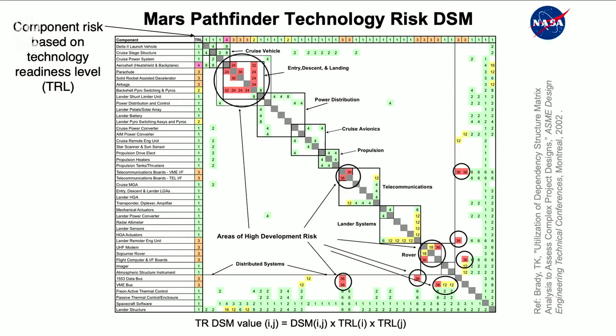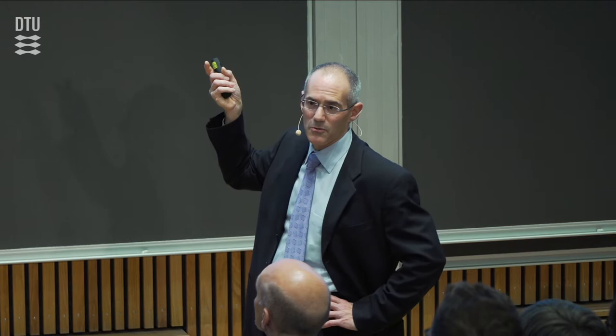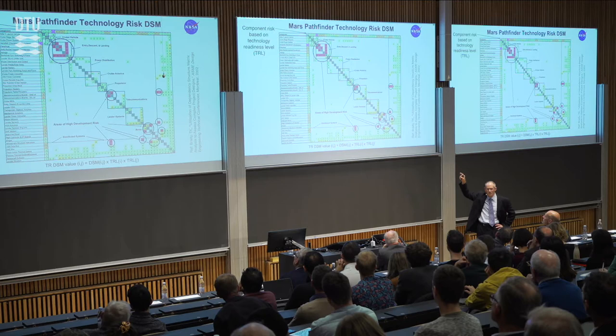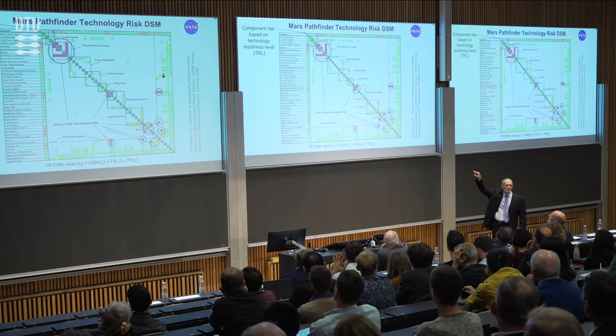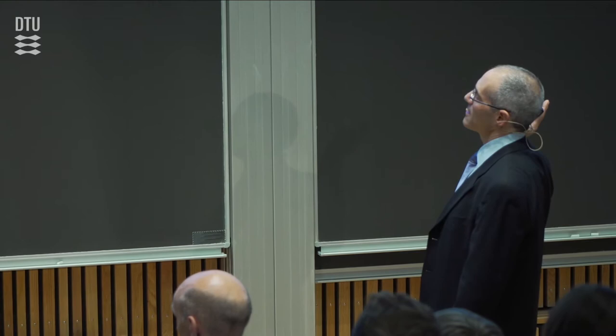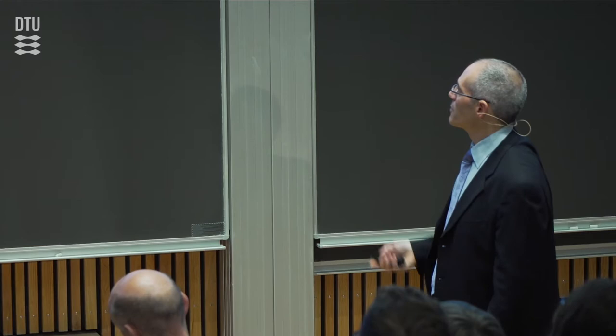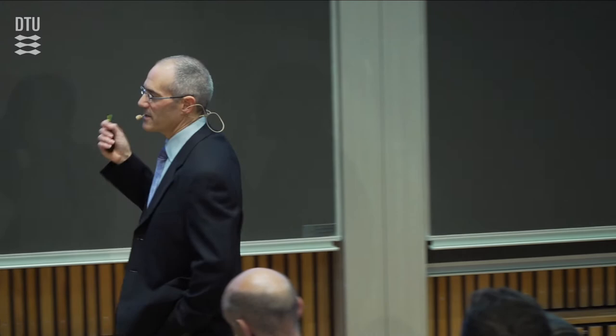So it was a highly critical interface with new technology on both sides — a high risk interface. This allowed them to lay out for the whole mission where all the high risk interfaces are and where the high risk areas of development are. That's an example of a system architecture analysis. One could do these analyses one domain at a time — I showed you product, process, and organization domain examples. With a few extra minutes I'm going to show you an example that takes two of those domains together.